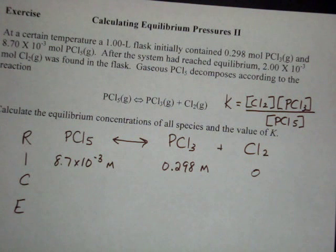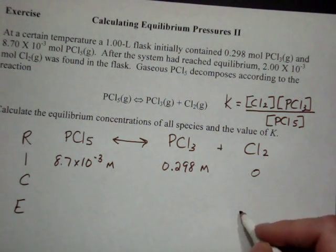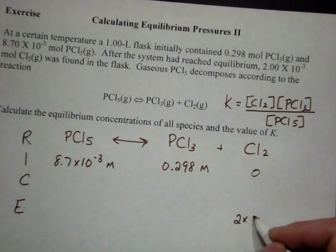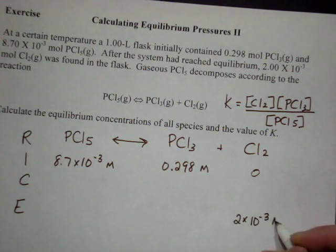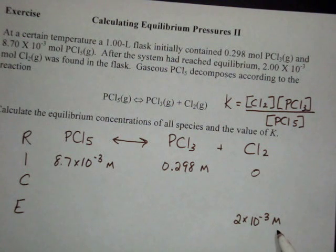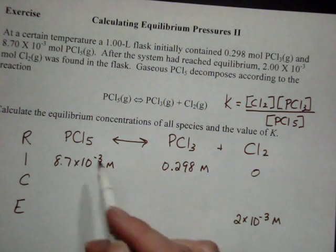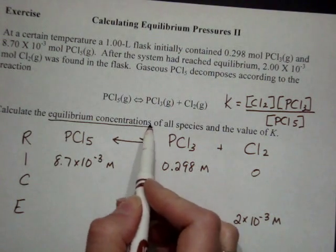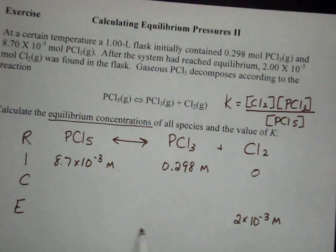It also says after the system reached equilibrium, 2 times 10 to the negative third moles in 1 liter. So 2 times 10 to the negative 3 molar chlorine was present in the flask. Then what I need to find out is the equilibrium concentrations of all the species. So I need this spot and this spot and the value of K.